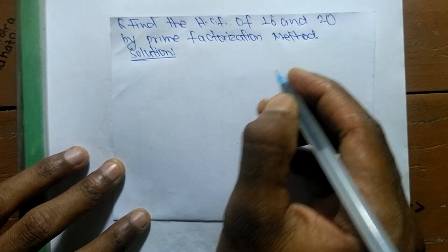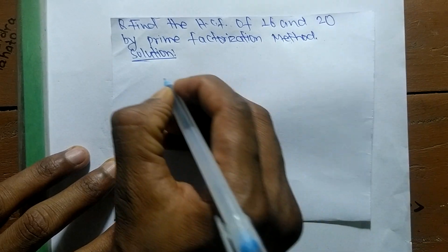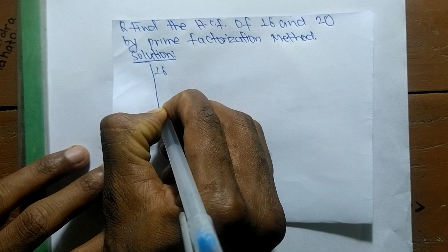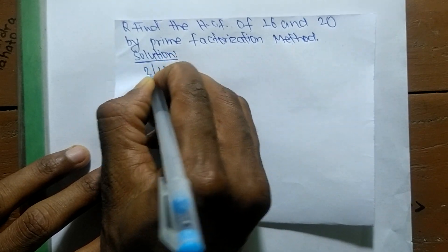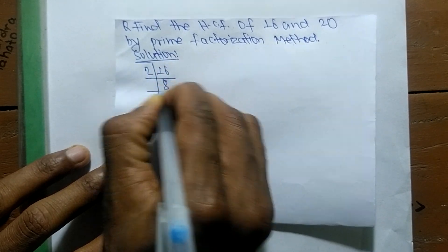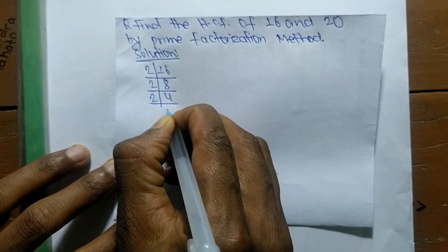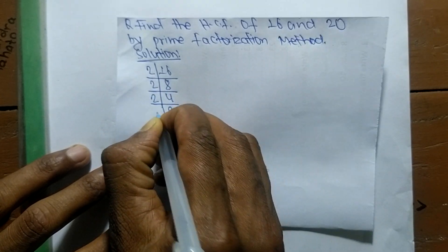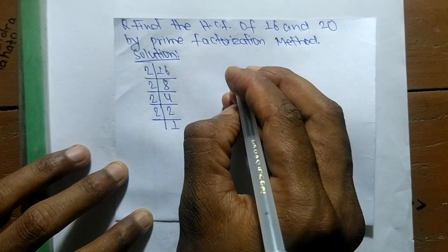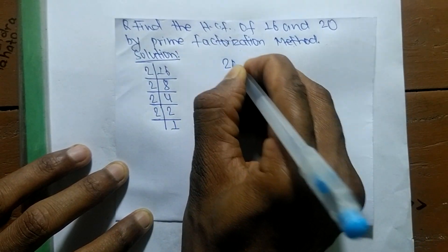First, we find out the prime factors of 16. So it is 2 times 8 means 16, 2 times 4 means 8, 2 times 2 means 4, and 2 times 1 means 2. These are the prime factors.